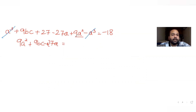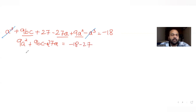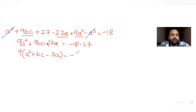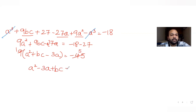So 9a² + 9bc - 27a = -18. Moving 27 to the right gives -18 - 27 = -45. Taking 9 as common: a² + bc - 3a = -5. So I get a² - 3a + bc = -5.